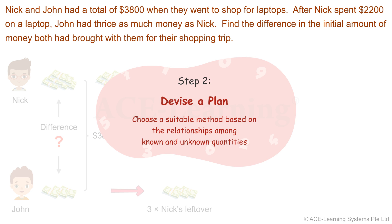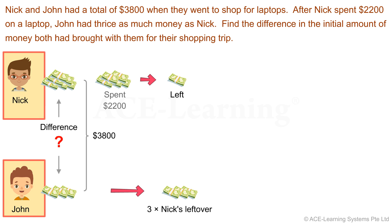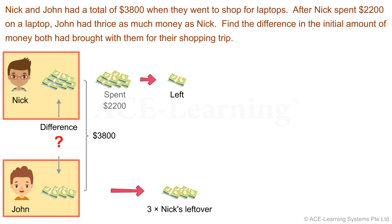Step 2: Devise a plan. Choose a suitable method based on the relationships among known and unknown quantities. We can see from our diagram that there is a comparison of two quantities — Nick's and John's amounts of money. A comparison model will be able to help us illustrate the relationship between these two quantities.